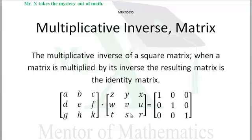Then if this matrix is the inverse of this matrix, when we multiply them, we get the identity matrix which is zeros everywhere except for the ones on the main diagonal. This is the identity matrix.